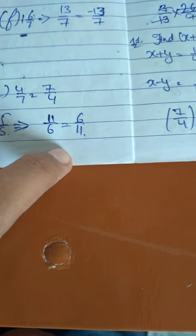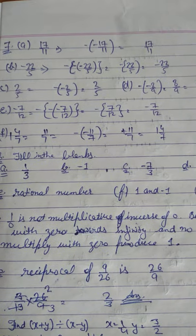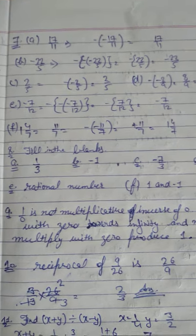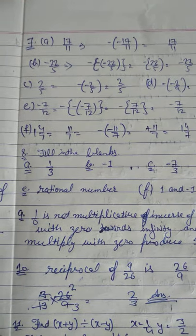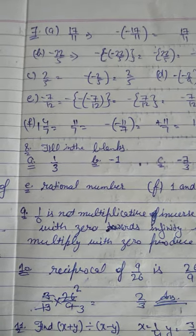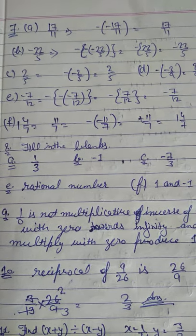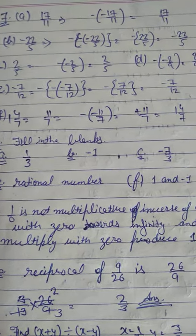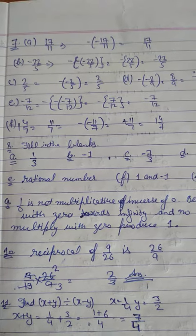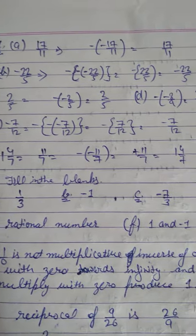In the seventh sum we verify using the expression with minus minus x. We replace x with the given rational number and verify the answers.